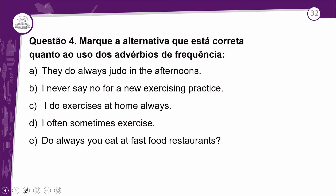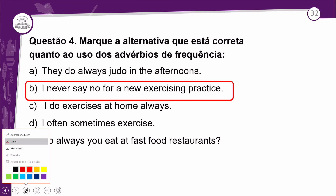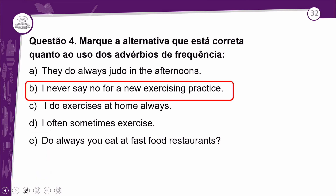Questão 4: marque a alternativa correta quanto ao uso dos advérbios de frequência. Tem um que a posição está correta e quatro que estão erradíssimas. A resposta é a letra B: 'I never say no to a new exercise practice.' A letra A está errada — 'They do always judo' deveria ser 'They always do judo'. C: 'I do exercise at home always' deveria ser 'I always do exercises at home'. D: 'I often sometimes exercise' — você escolhe um ou outro. E: 'Do always you eat fast food restaurants?' deveria ser 'Do you always eat at fast food restaurants?'